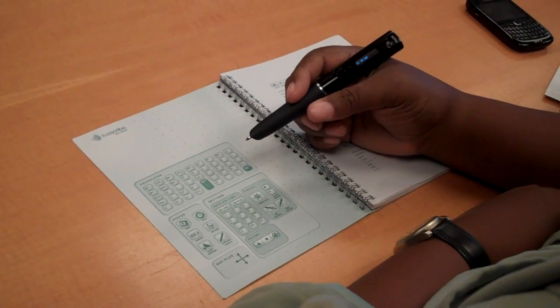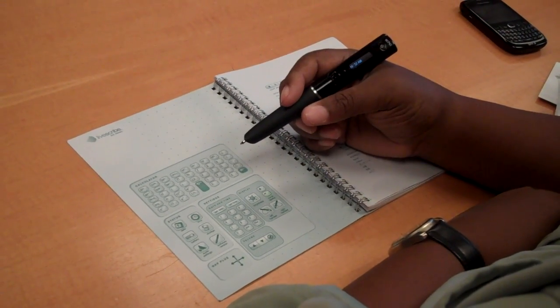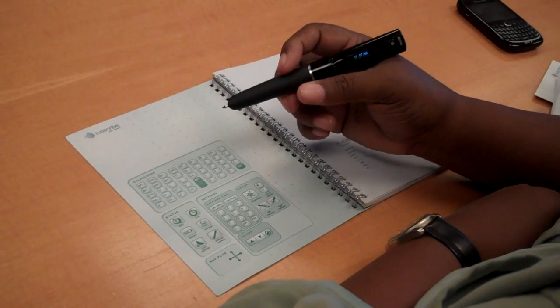Okay, a couple of other quick things with the Echo SmartPen. I'm going to use a calculator. It's already been turned on.